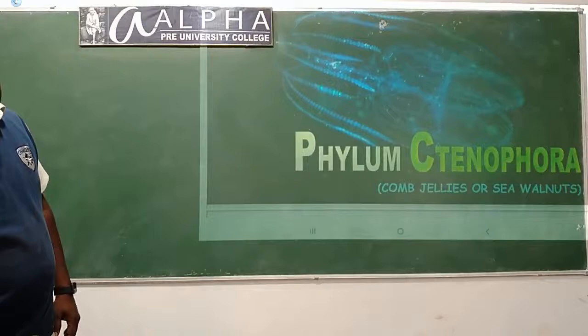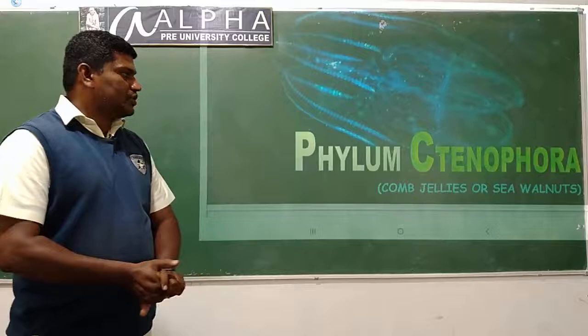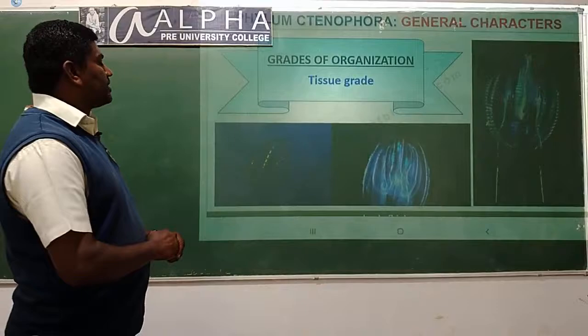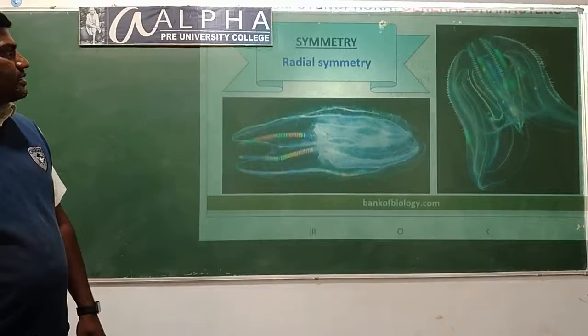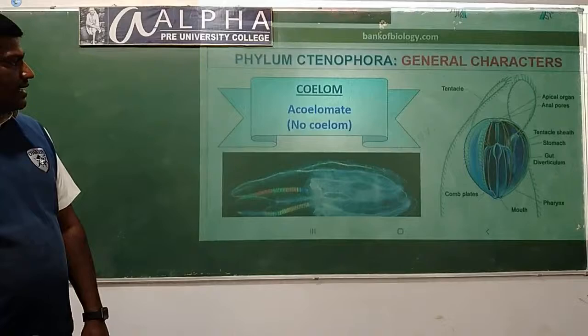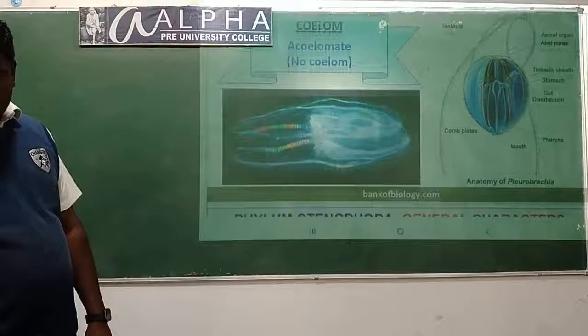The next phylum is Ctenophora, commonly called as comb jellies or sea walnuts. The level of organization is tissue level. The symmetry is radially symmetrical. They are diploblastic, consisting of two germ layers - ectoderm and endoderm - and are acoelomate, without a coelomic cavity.